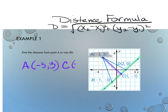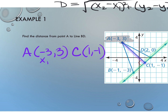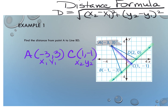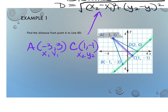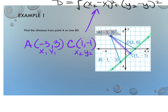Point C is at (1, −1). I'm going to label my x₁y₁ and x₂y₂ to make it easy to plug into the formula. It doesn't matter which one is x₁y₁ and which is x₂y₂, so I'll say A is x₁y₁ and C is x₂y₂. Plugging in: the square root of (1 minus −3) squared plus (−1 minus 3) squared. This whole thing is under the square root.